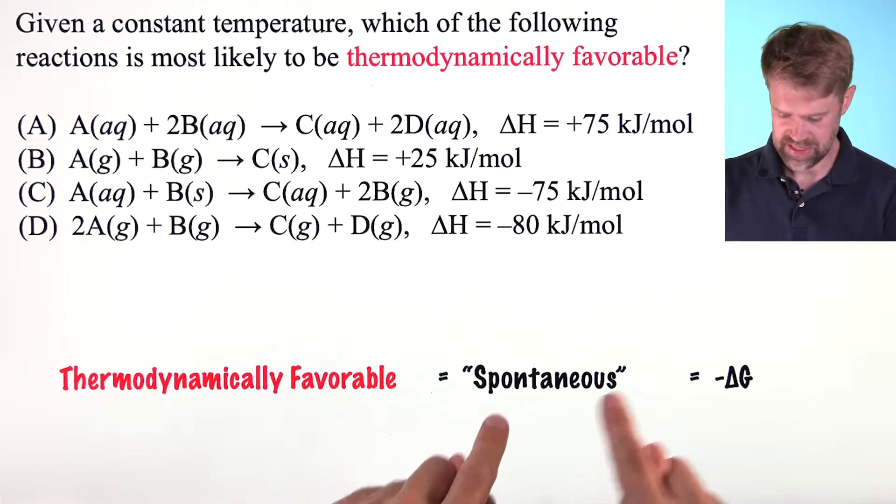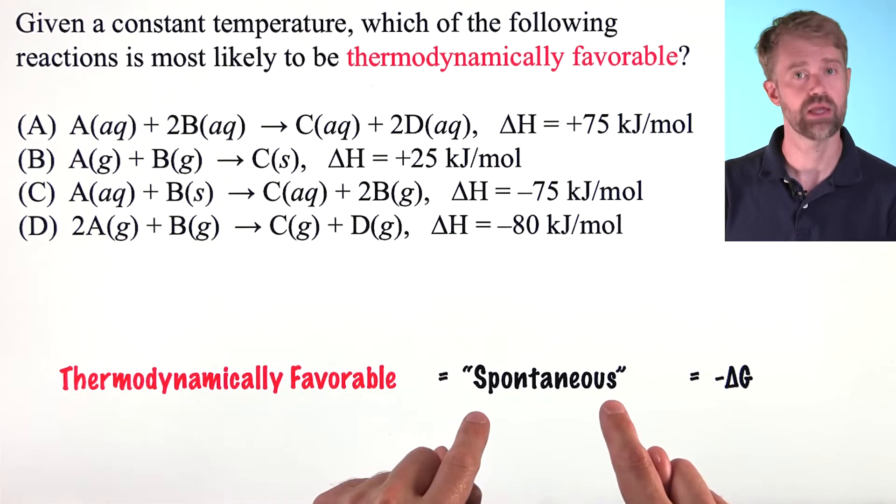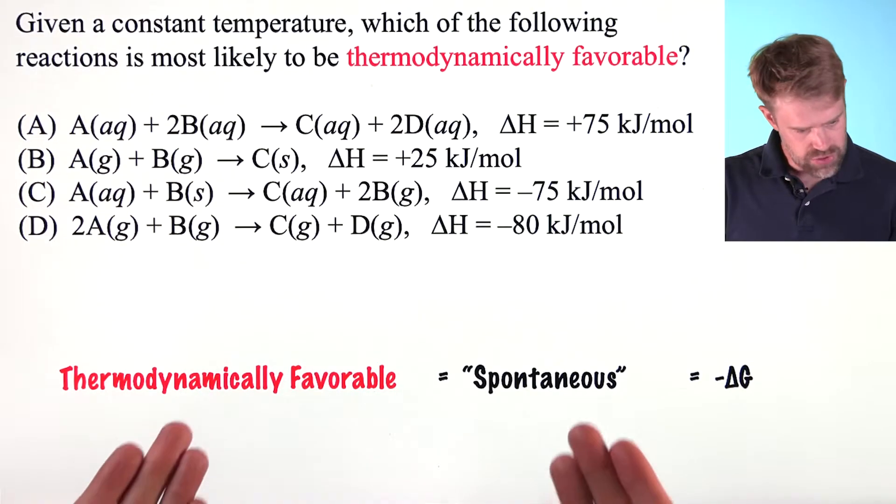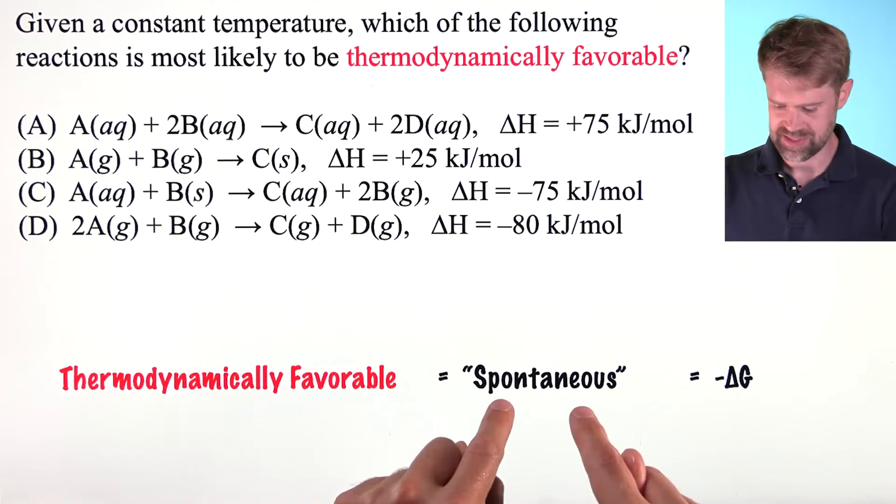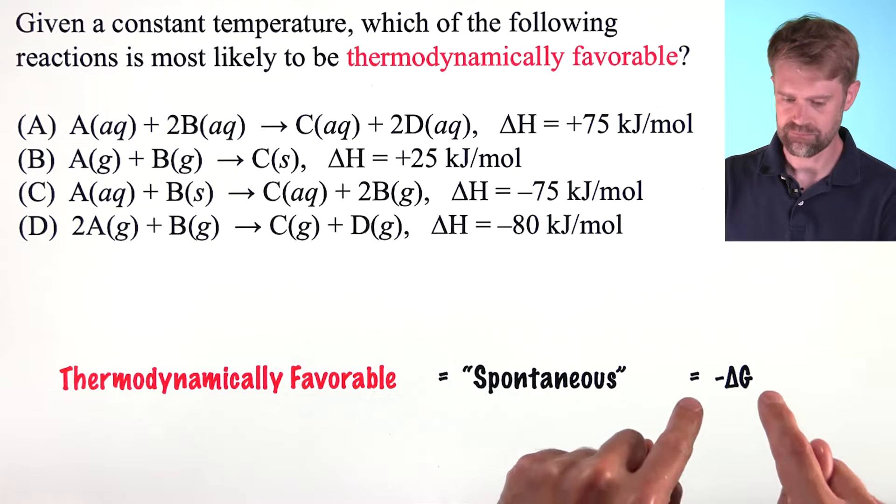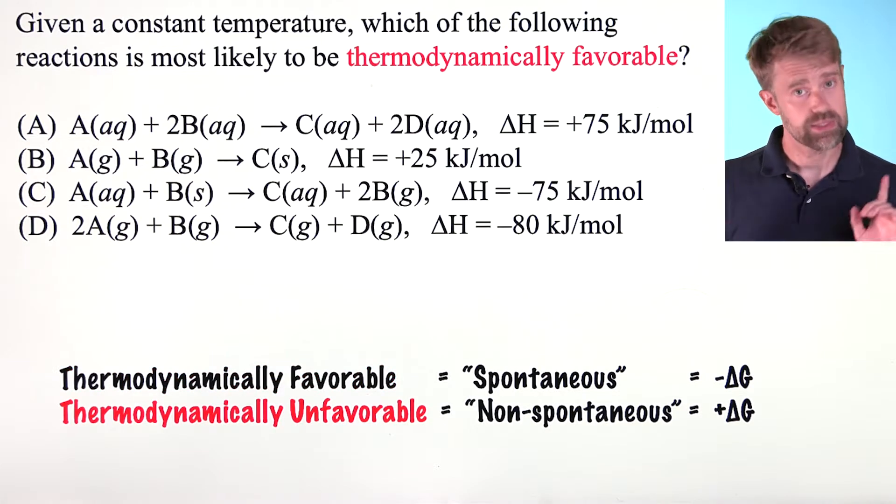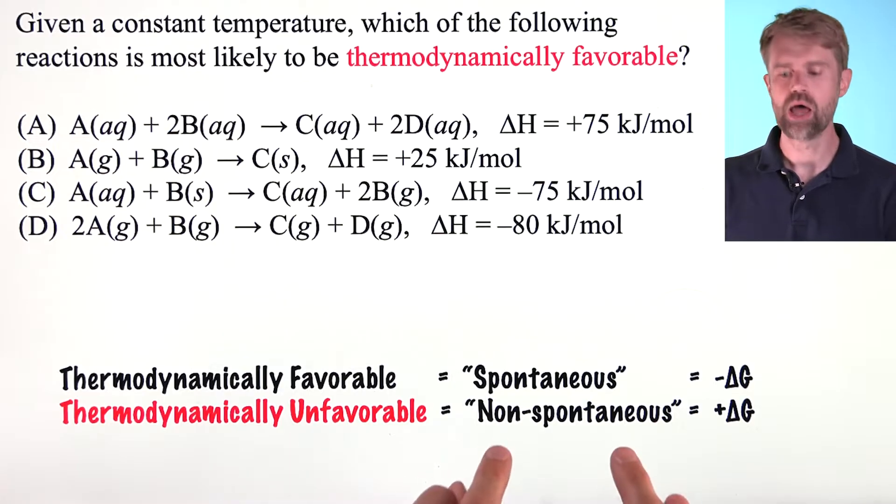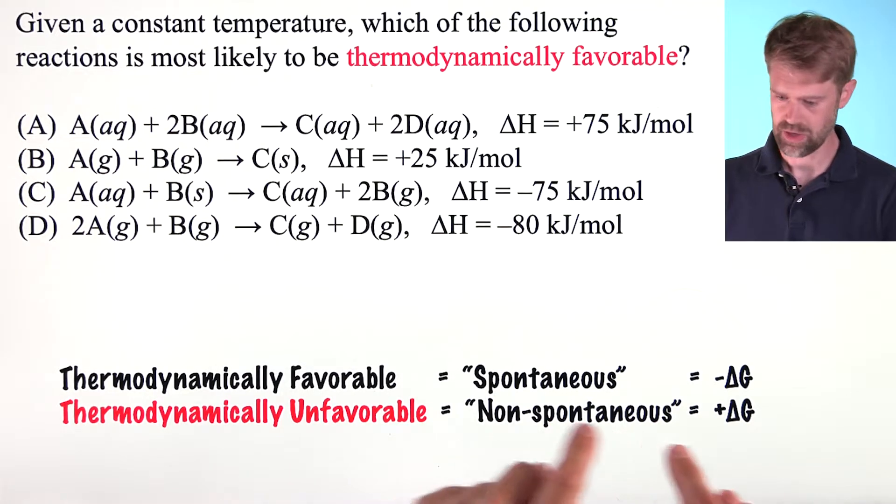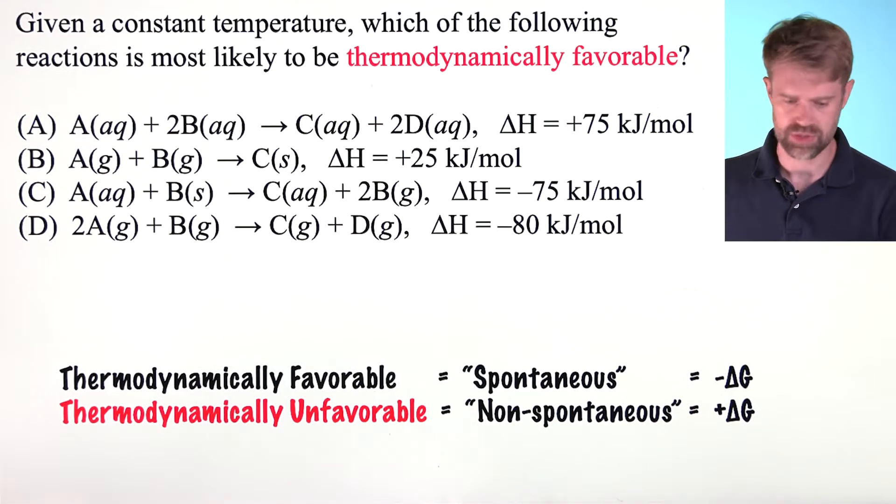Chances are they say spontaneous instead. Both of these terms describe a process that has a negative delta G. And similarly, thermodynamically unfavorable means non-spontaneous, a process with a positive delta G.